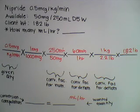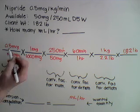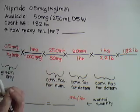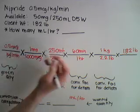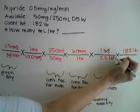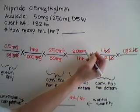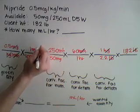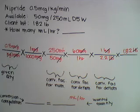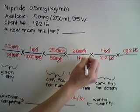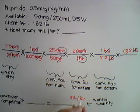There are no further conversion factors necessary for this equation, so we can now start canceling out our unwanted units. We're going to start with our micrograms. Next, we can cancel out our kilograms. We can also cancel out our pounds. We can cancel out our minutes. And we can cancel out our milligrams. The unit factors we're left with are milliliters and hour, which is exactly our wanted quantity — milliliters per hour.